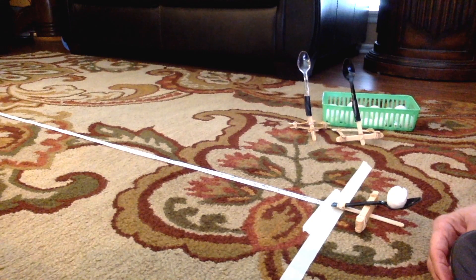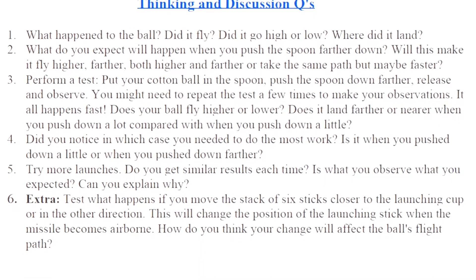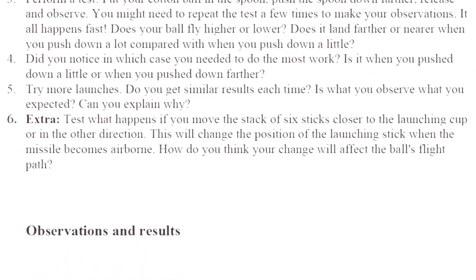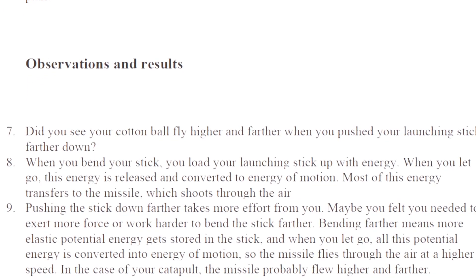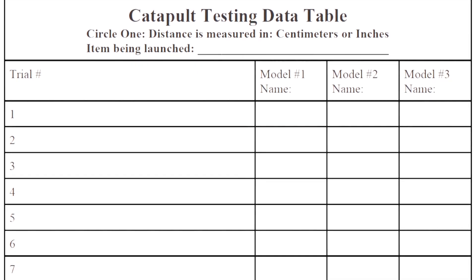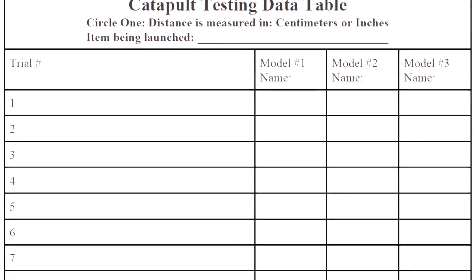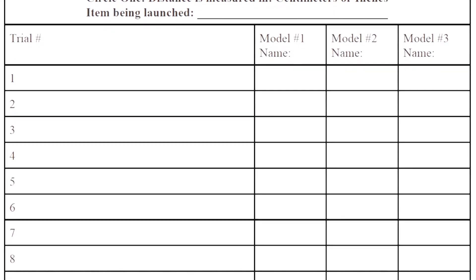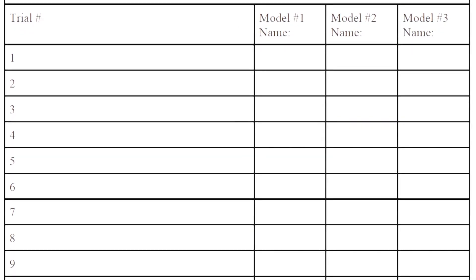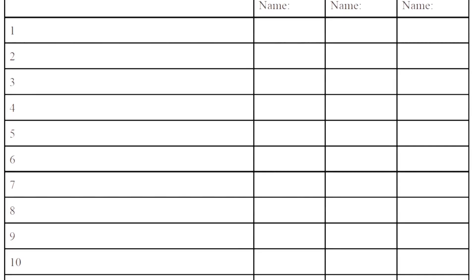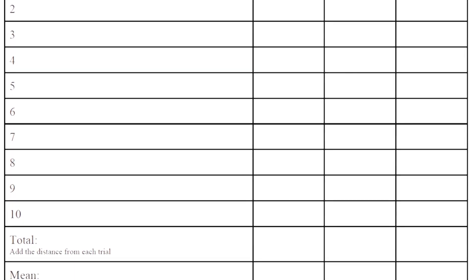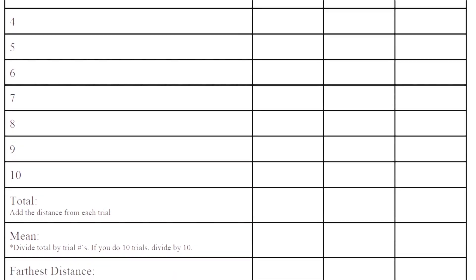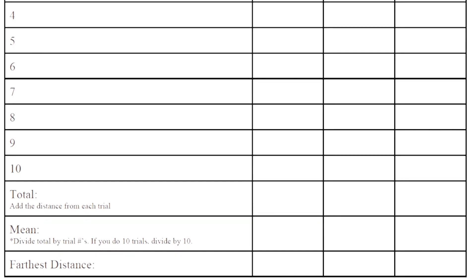As we're testing, you can also be looking at the discussion sheet, which is found below the video. The discussion questions have some questions to make you think about ways you can improve your catapult. You're also going to be using your data sheet. On the data sheet, you will mark whether you are measuring in inches or centimeters, you will mark the item being launched, and I have it set up for 10 trials. Once I do my 10 trials, I will add the total and divide by how many trials I had. I also want to mark my farthest distance.